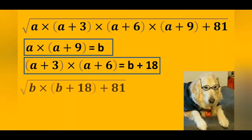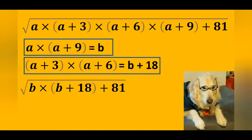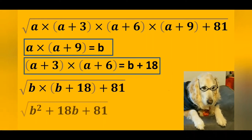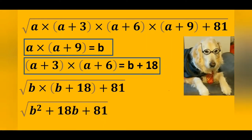If we write the inside of the root in terms of variable b, we will see something interesting. A perfect square is formed inside the root. This is exactly what we need. We are very close to the answer.